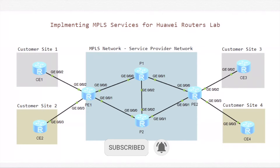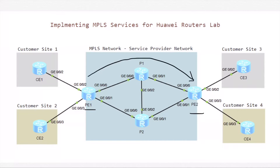LDP LSP is established based on IGP convergence. If PE1 wants to get to PE2, IGP will select the best path from PE1 to PE2 based on the best cost or lower cost. If the cost of the path via P1 is better than the cost of the path via P2, the path via P1 will be selected as the best path, and then the MPLS LDP LSP path will be established over P1.